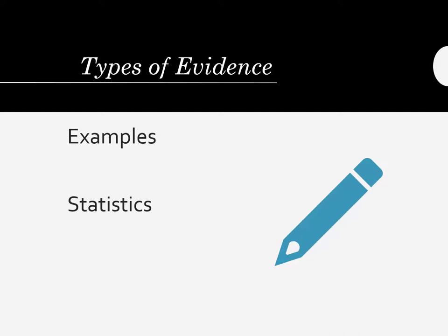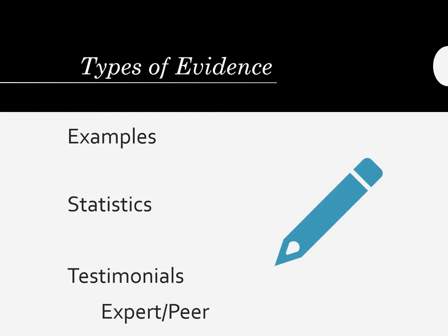A final type of evidence you should use in your speech is called a testimonial. A testimonial is a statement made by either an expert or a peer. For example, you might find an expert testimonial in an interview printed in an academic journal, or you could interview your roommate about their experience with your topic for a peer testimonial.